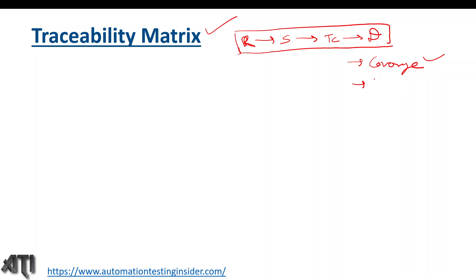Another advantage is it helps us find the root cause of a defect. Because the document maps to defects as well, from a defect we can find out which test case it belongs to, from the test case we find the scenario, and from the scenario we find the requirement. This is how we can trace the root cause of any defect, making this a very important document in testing.